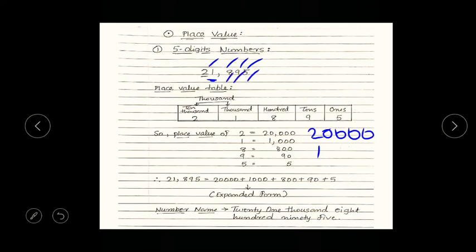So, again we have to put how many zeros? 3 zeros. 1, 2 and 3. That's it. You have just find out the place value for digit 1. And same for number 8, same for number 9 and same for number 5. And all this you have learned in standard 4th.